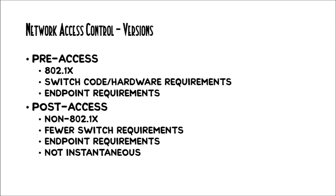Pre-access does involve upgrading switch code and possible hardware upgrades to make sure that the hardware supports full 802.1x functionality. Failure to have these upgrades can result in an 802.1x system that creates a lot of problems. It also involves making sure the endpoints are up to speed. An endpoint that can't be made compliant is going to create one kind of headache or another, so you want to be prepared for that.